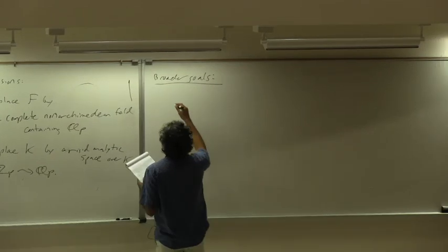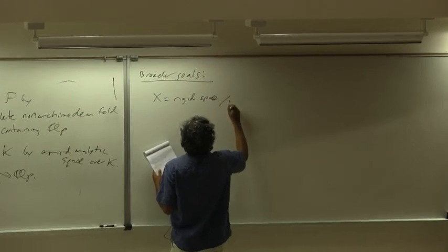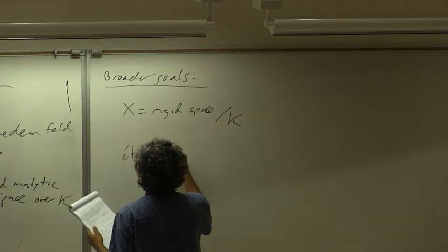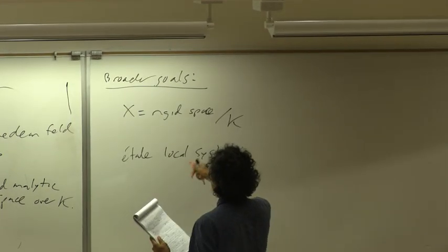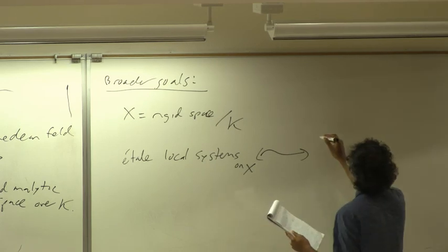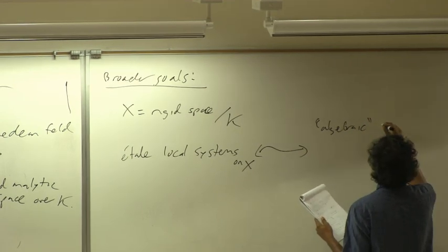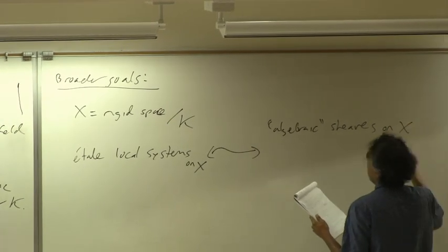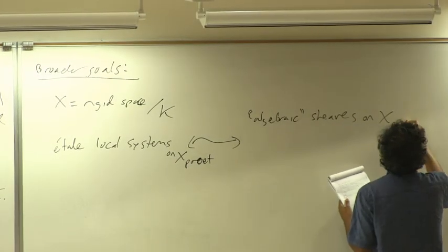The broader goal is that if X is some rigid space over K, I want to talk about its étale local systems on X and relate these to certain algebraic or coherent — in serious scare quotes, because one needs to define something more precise — objects. When I talk about X, there's going to be some funny topology which was mentioned already this morning, but I'll come back to that.